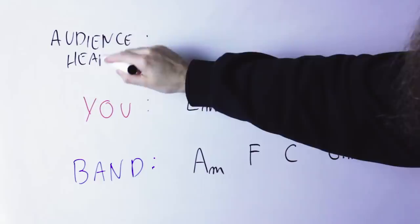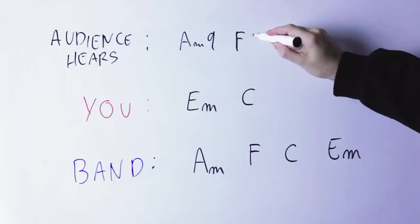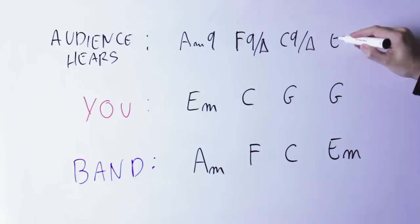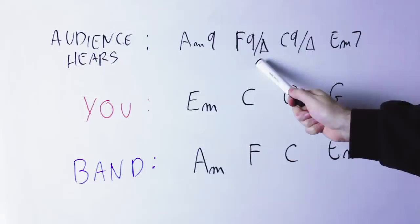Over the C chord I'm going to play a G chord and the extra notes the B and D are again the major seventh and the 9. Over the E minor chord I'm going to play again a G triad and the extra note D is the 7th of E minor. So the chord progression will sound like A minor 9 F9 major 7 C9 major 7 E minor 7.